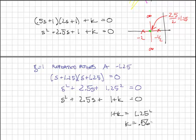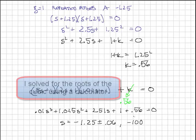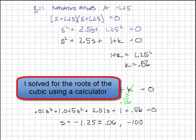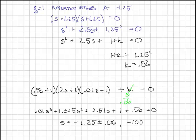So I'm going to go back to the full system and substitute k back in. Substituting k into the third order system, doing all the algebra, finding the values for s, we have s at minus 1.25 plus or minus 0.06, pretty much right on the real axis, and minus 100. This is what we expect.